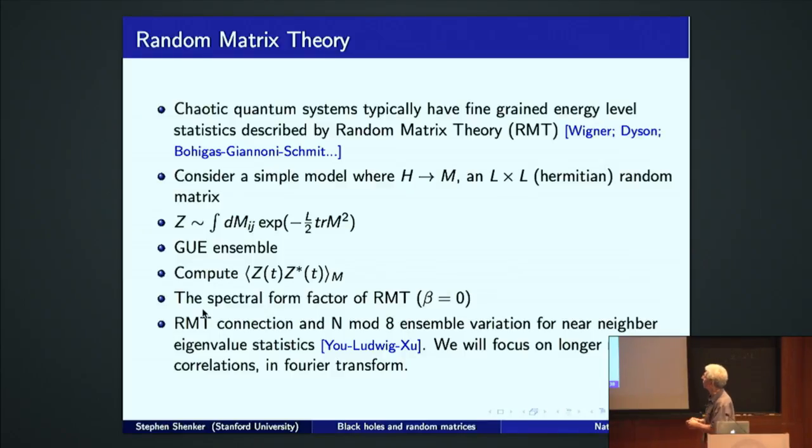So, this leads us to consider a simple model where we take the SYK Hamiltonian, it's an L by L matrix, and model it by M, an L by L Hermitian random matrix. Okay. The SYK model, even though it's got some randomness injected, it's got these J's that are random. There's only n to the fourth of them. M here has L squared, exponentially large random numbers.